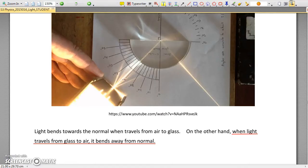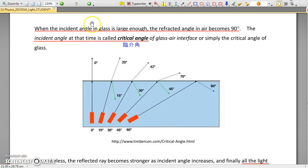So it all starts with when light ray travels from glass to air, it bends away from normal. When the incident angle keeps on increasing, the refracted angle will also keep on increasing and finally becomes 90 degrees.